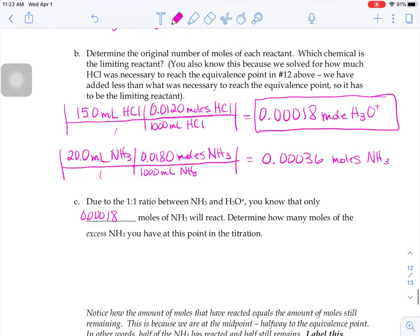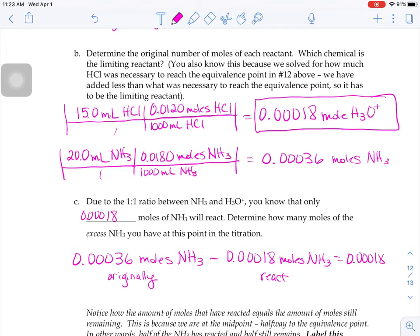So, if we have 0.00036 moles worth of ammonia to start, but only 0.00018 moles worth of that NH3 are going to react with our H3O+, that means that we have 0.00018 moles worth of NH3 left over.